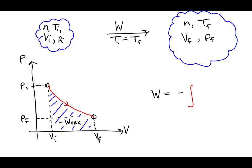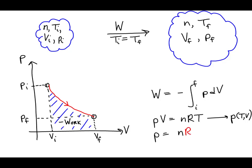It can be shown that the work done on a gas by its environment may be found by integrating pressure with respect to volume. The ideal gas law says the product of pressure and volume is directly proportional to the temperature. So let's use the ideal gas law to express pressure as a function of both temperature and volume: pressure equals the number of moles times the gas constant times the ratio of the temperature to the volume.